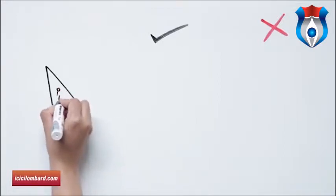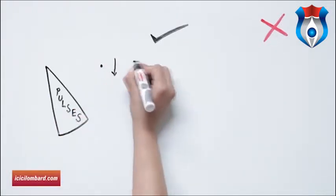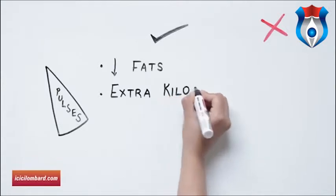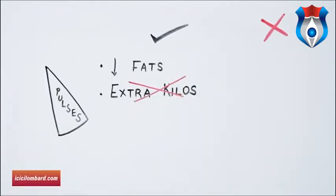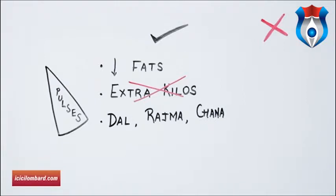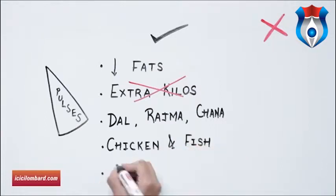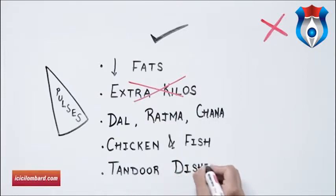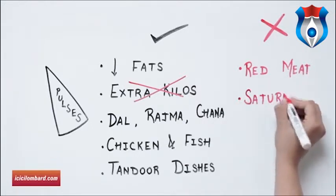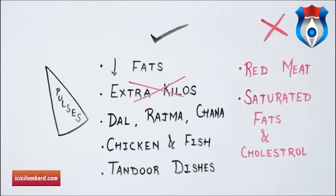With negligible fat content, pulses are packed with protein, vitamins, minerals and fiber. Once you include them in your daily diet, the extra kilos almost never come back. Pulses form a crucial part of meals like dal, rajma and chana. For non-vegetarians, try to stick to white meat like chicken or fish — tandoor dishes like chicken tikka or fish tikka are cooked in almost no oil. Stay away from red meats like lamb and beef which are high in saturated fats and cholesterol, leading to heart disease.